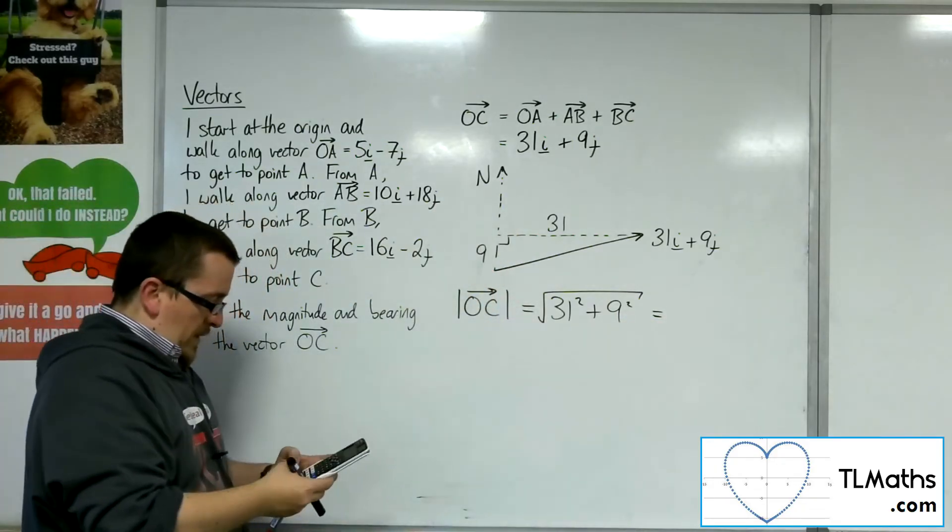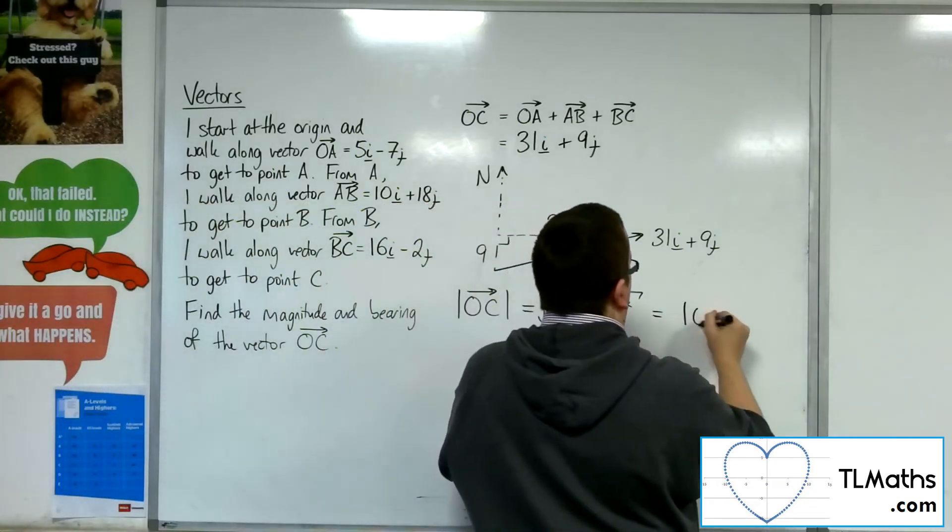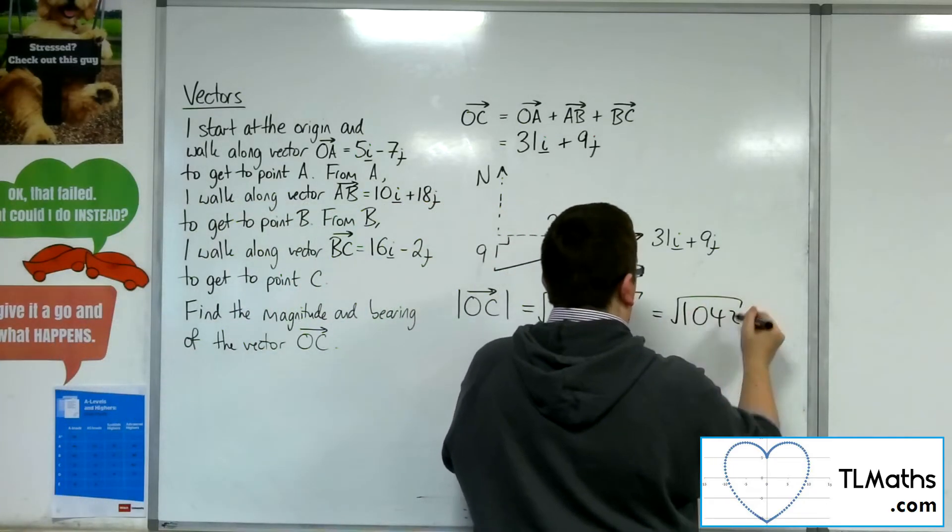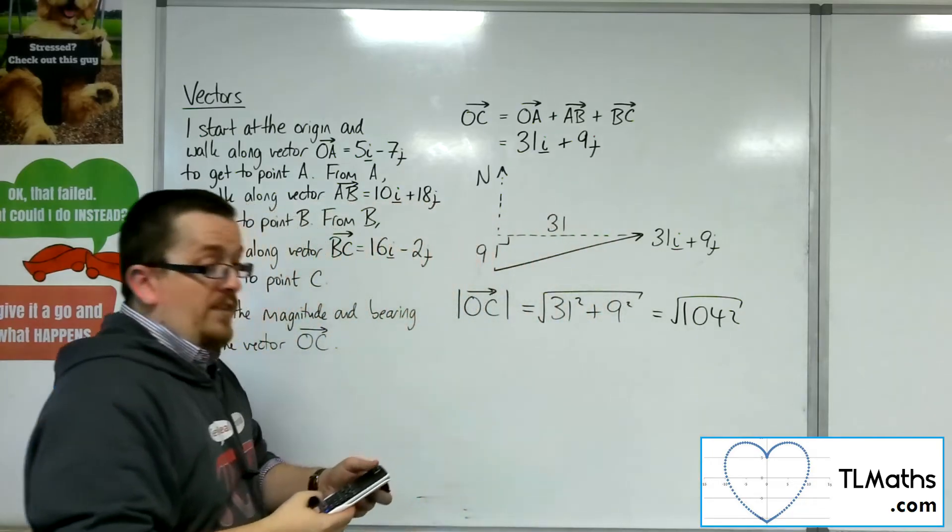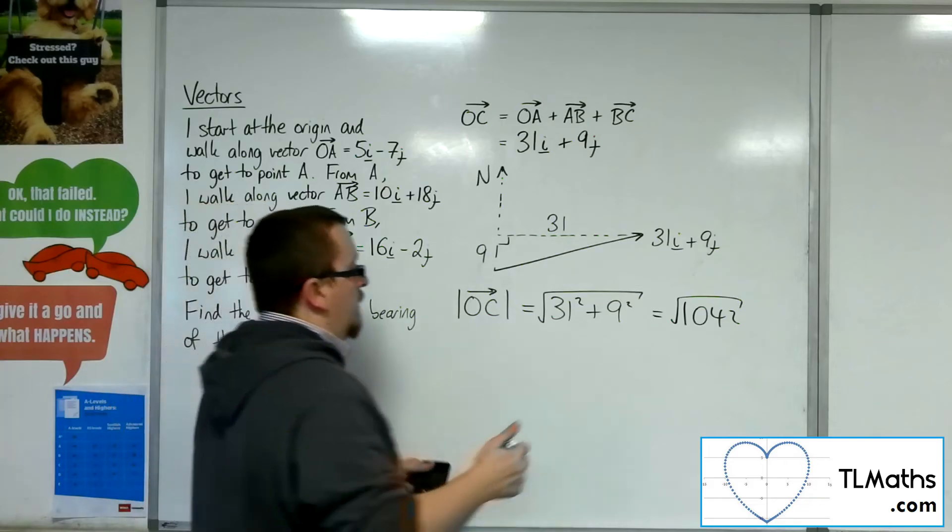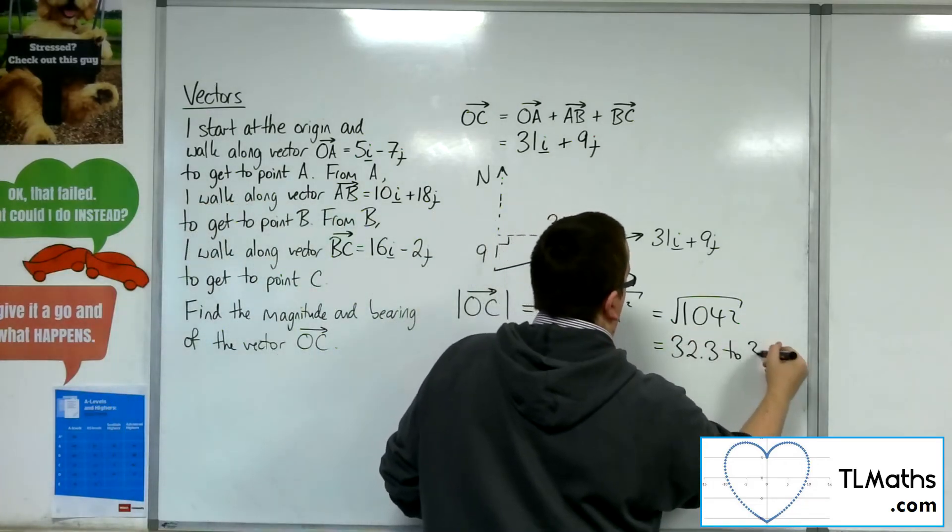So 31 squared plus 9 squared is the square root of 1042, which is approximately 32.3. So 32.3 to 3 sig fig.